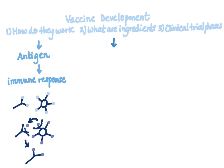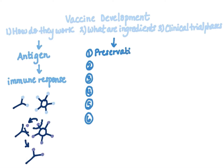Number two: what are vaccine ingredients? There are six. First, preservatives — these prevent the vaccine from becoming contaminated once the vial is opened for multi-dose use; some vaccines don't have preservatives because they're stored in single-dose vials and discarded after use. Second, stabilizers — these prevent chemical reactions within the vaccine and keep components from sticking to the vial. Third, surfactants — these keep all ingredients in the vaccine blended together.